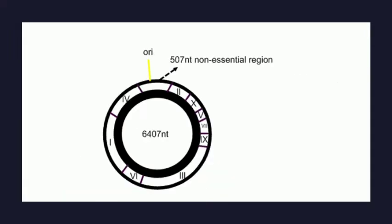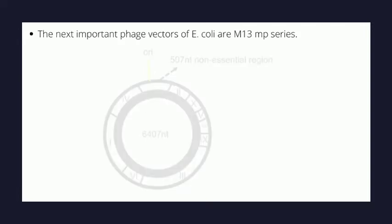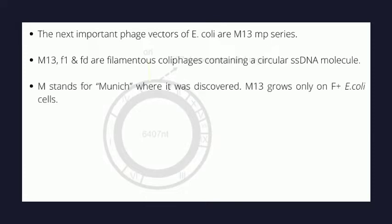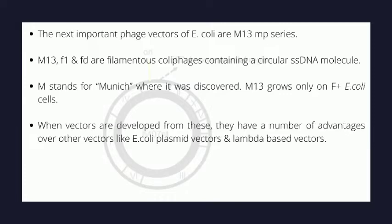Now going to the next system — M13 vectors, termed the MP series. This is a single-stranded DNA phage. M13, as well as f1 and fd, are filamentous coliphages containing a circular single-stranded DNA molecule. M stands for Munich, where it was discovered. M13 infects only F-plus E. coli cells.